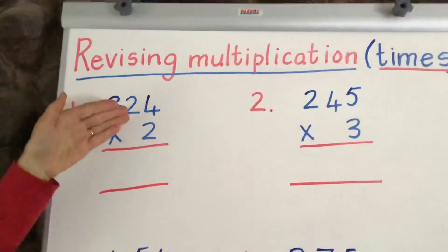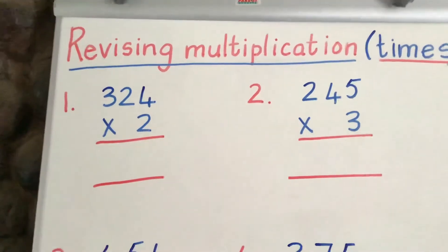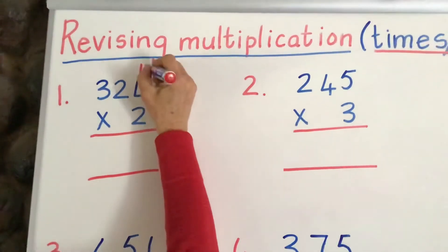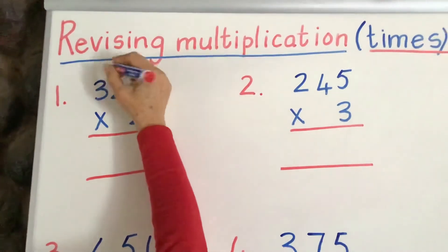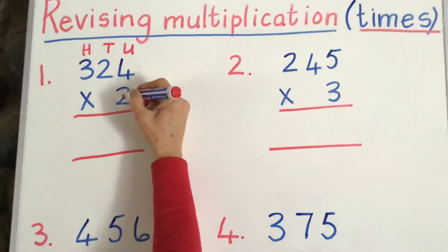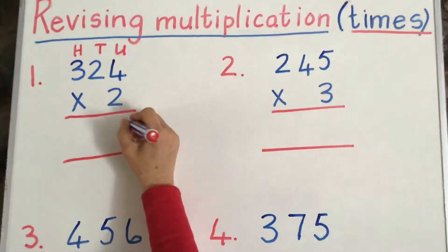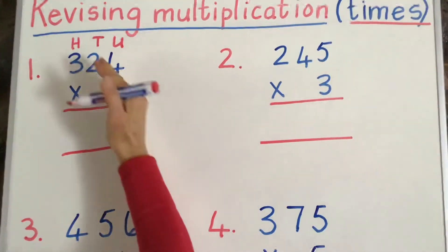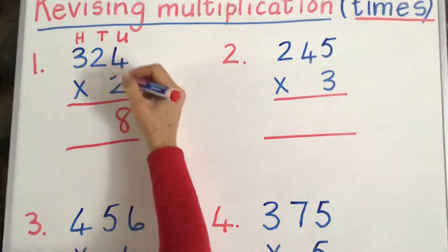Right, so 2 times 324. So we start with the units, remember to help you, if you want to, you can always write UTH, the units, the tens and the hundreds going that way. Right, 2 times 4 is 8. Nothing to carry over, because it isn't 10 or more.